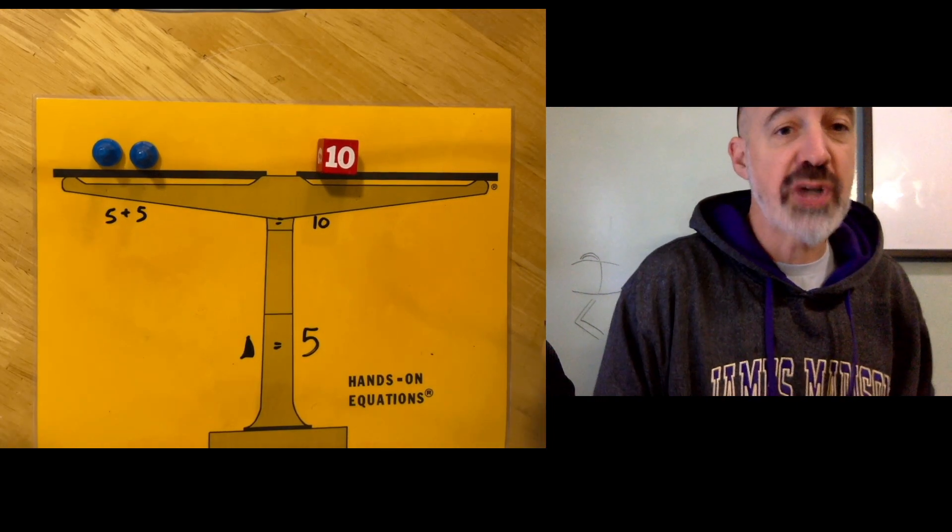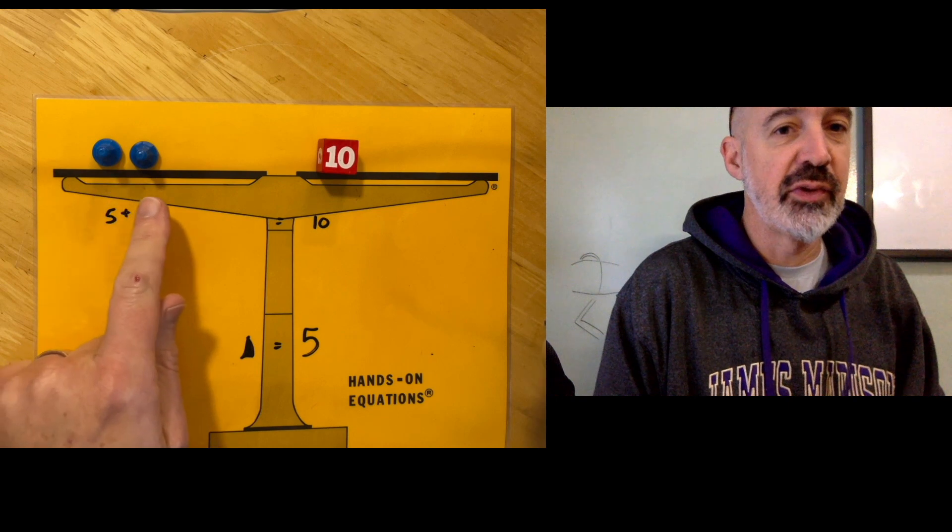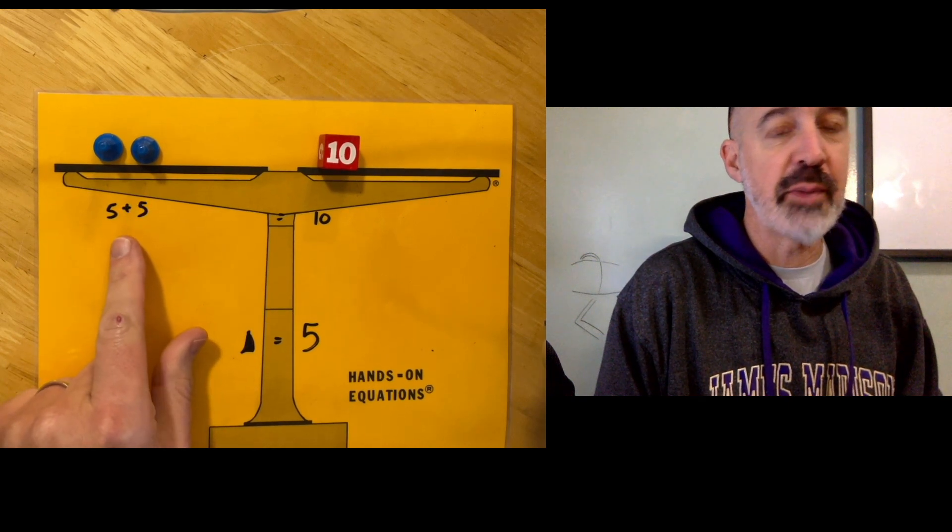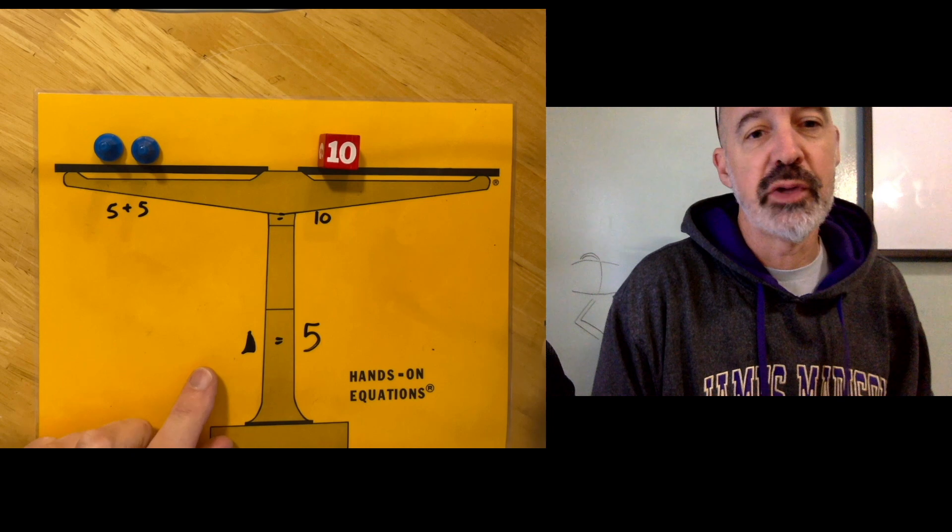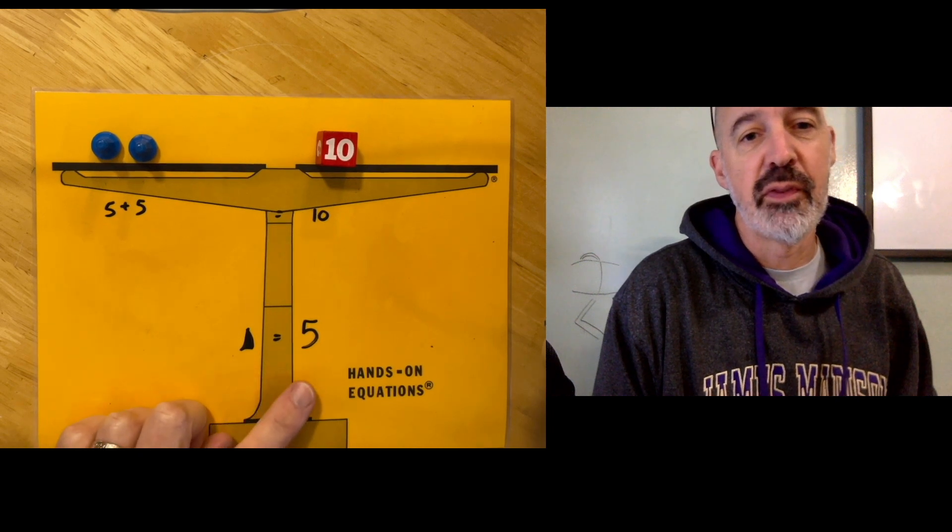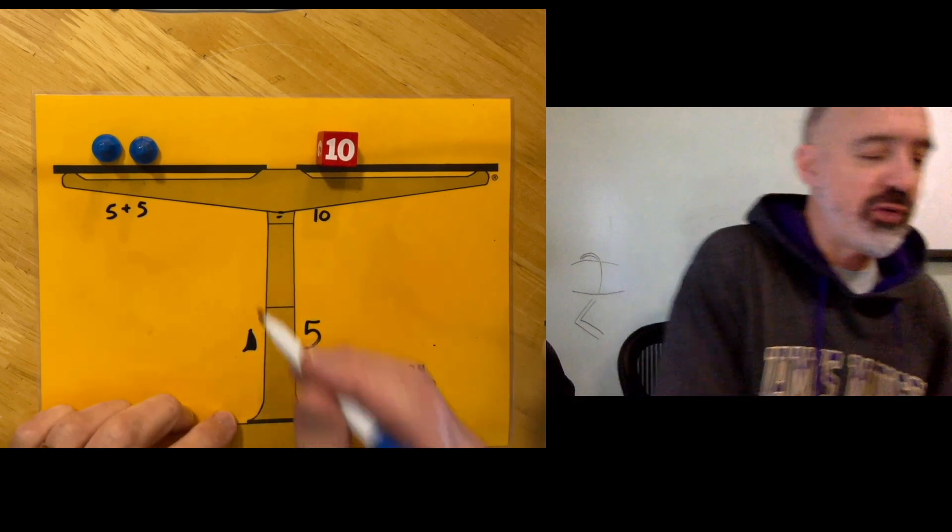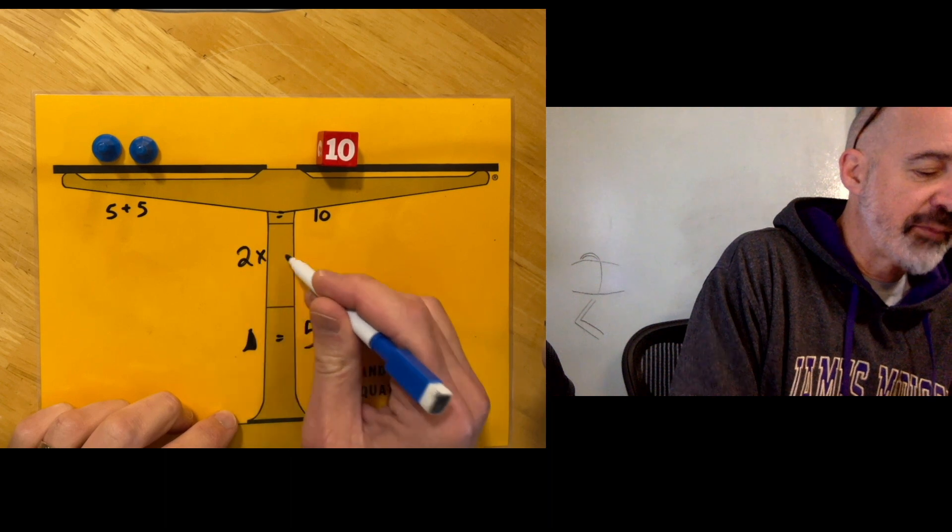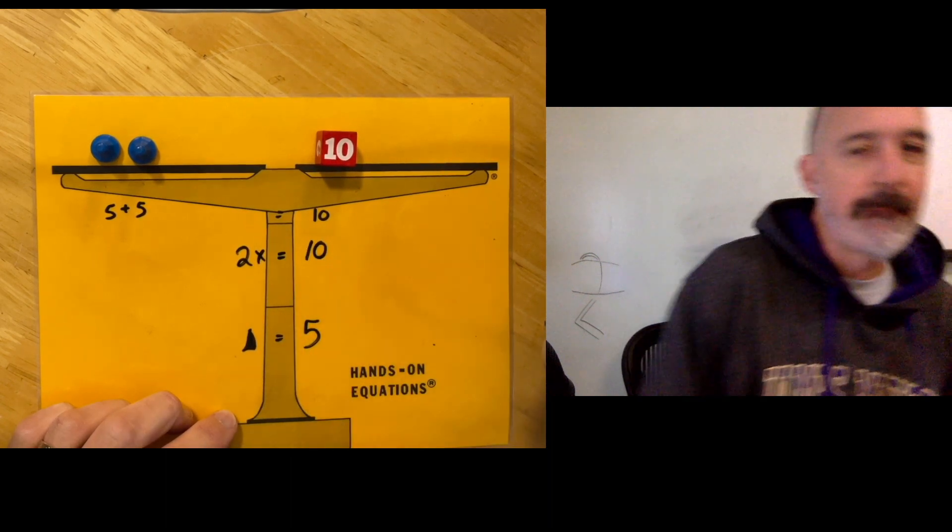So it's important for a child to recognize that these two pawns must equal the same amount and altogether they equal 10. So each pawn is worth 5 and this equates to the equation 2x equals 10.